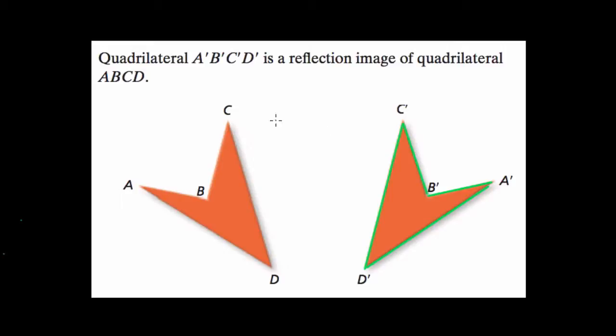We're told that this is the reflection of quadrilateral ABCD, right here. We need to find the line of reflection and then describe how we found it and what we notice about these two shapes.